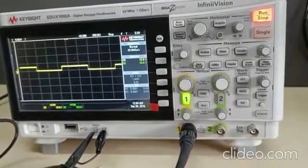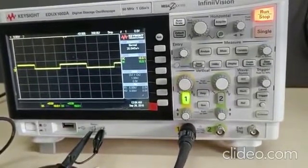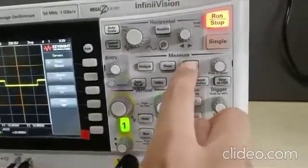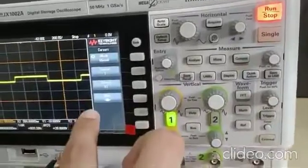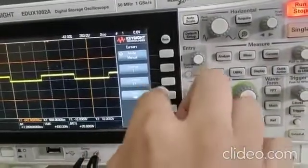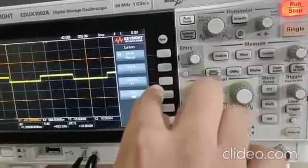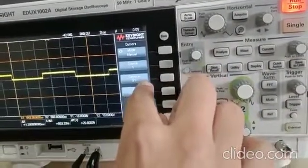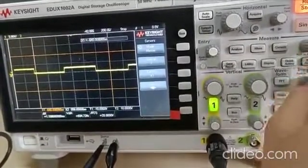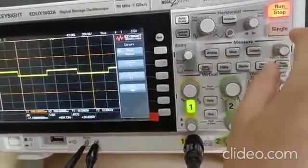Now we will select Cursors. To select Cursors, we need to press the Cursors button and the Cursors appear. Currently cursor 1 is selected. We can see the cursor 1 is selected from here. To move the cursor, we need to use this button.